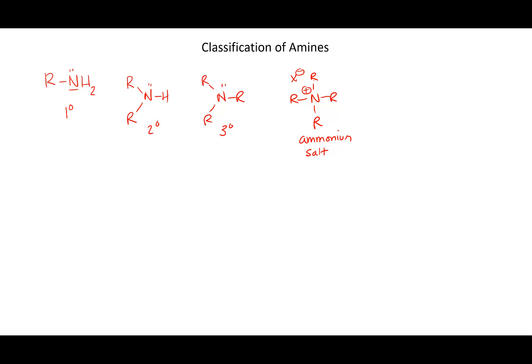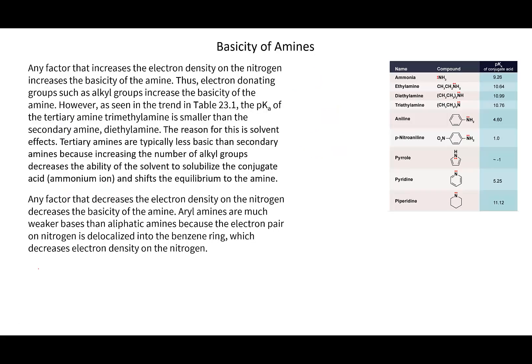We also have a nitrogen that is attached to a benzene ring, and that is called aniline. We'll talk a little bit about that in terms of basicity, but this is our basic classification of the different kinds of amines.